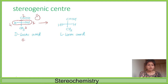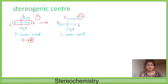Rotating one to two to three gives S configuration, but hydrogen is horizontal here rather than vertical, so S becomes R. For the other isomer: OH is number one, COOH is number two, CH3 is number three, and hydrogen is number four. Rotating one to two to three is clockwise, so it is R configuration, but hydrogen is horizontal, so R becomes S.